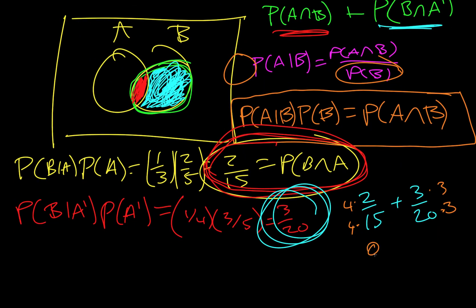So we end up with 8/60 and 9/60, so we add those together and we get 17/60 for P of B.